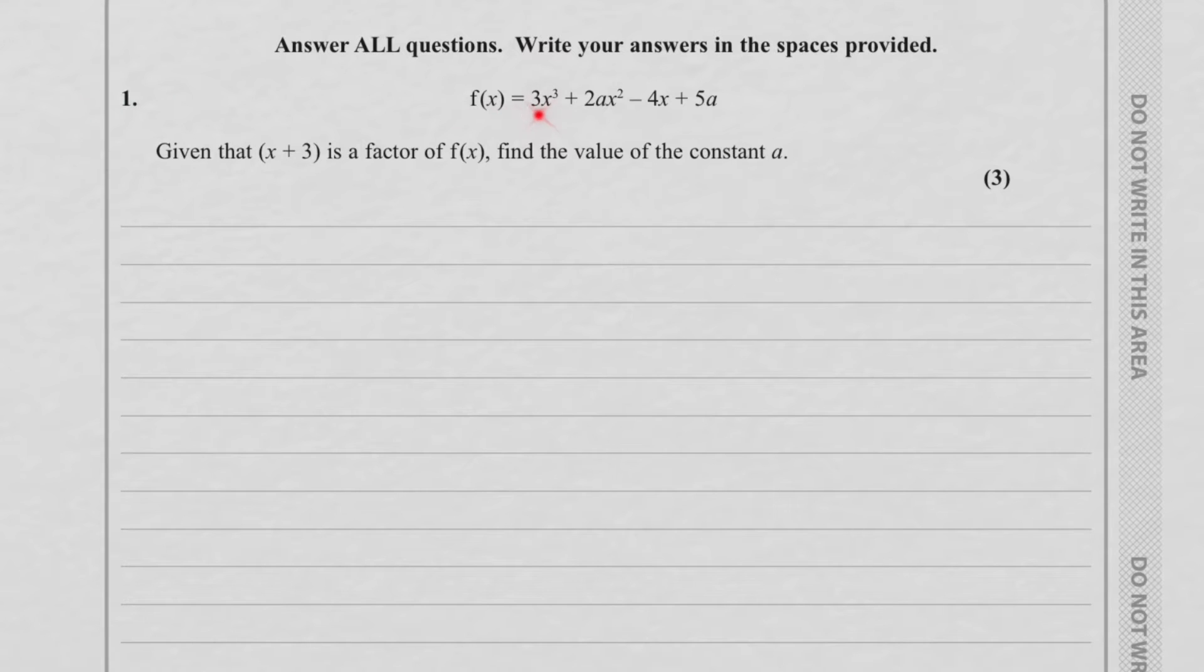Question 1. f of x equals 3x cubed plus 2ax squared minus 4x plus 5a. Given that x plus 3 is a factor of f of x, find the value of the constant a.